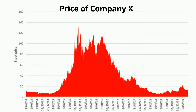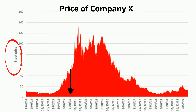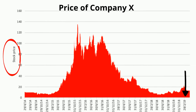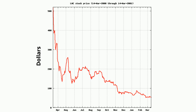Let's look at another example. You see line graphs used a lot with the stock market. You have the price of company X, and notice at the bottom, again, it is over time. And then you have the stock price on the y-axis. One more example, again from the stock market — you have dollars on the y and time on the x-axis.